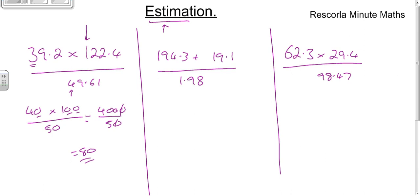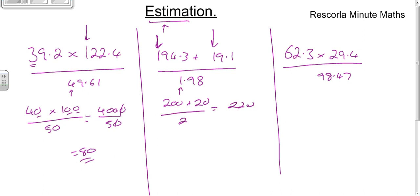The next one is 194. You round to the nearest 100 because it's in the hundreds column, so that's 200. The next is in the tens column, so you round to the nearest ten — that's 20. The one on the bottom is in the nearest whole number column, so that's 2. That gives 220 over 2, which equals 110.